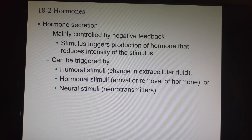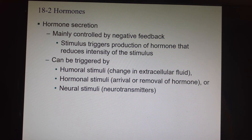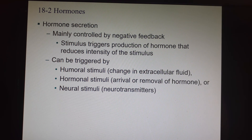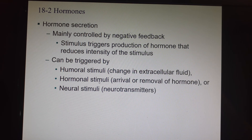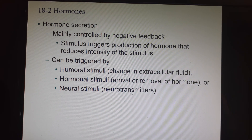We have certain background levels of most of these hormones going all the time, and so they're mainly controlled by the negative feedback process. If the hormone level drops, then that drop will be the stimulus that triggers them to be produced and released. The different things that can trigger hormone production and release are called humoral stimuli, hormonal stimuli, or neural stimuli, which involves the use of neurotransmitters.